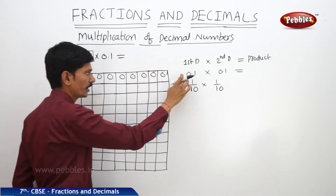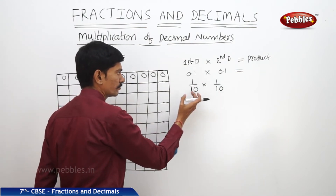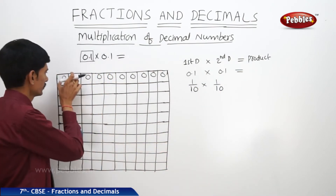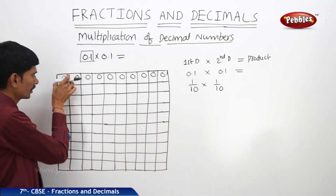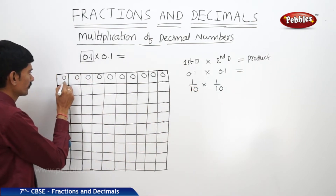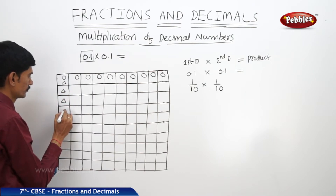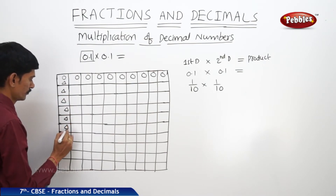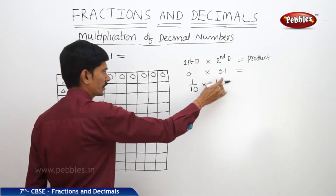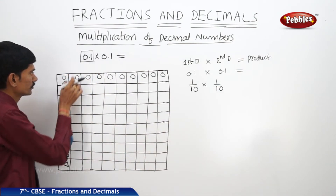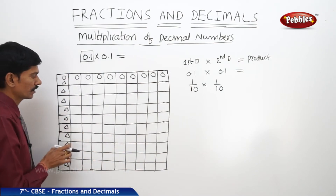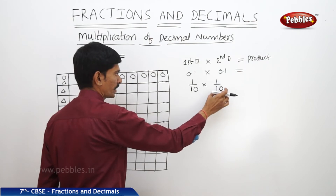This horizontal row represents 1 by 10. And again, we will multiply this by again 1 by 10. So, this represents the vertical rectangles. In these vertical rectangles, for the second decimal, I am drawing triangles. This is also 1 by 10 — out of 10 rectangles, we have shaded only 1 rectangle. So, this represents 1 by 10.